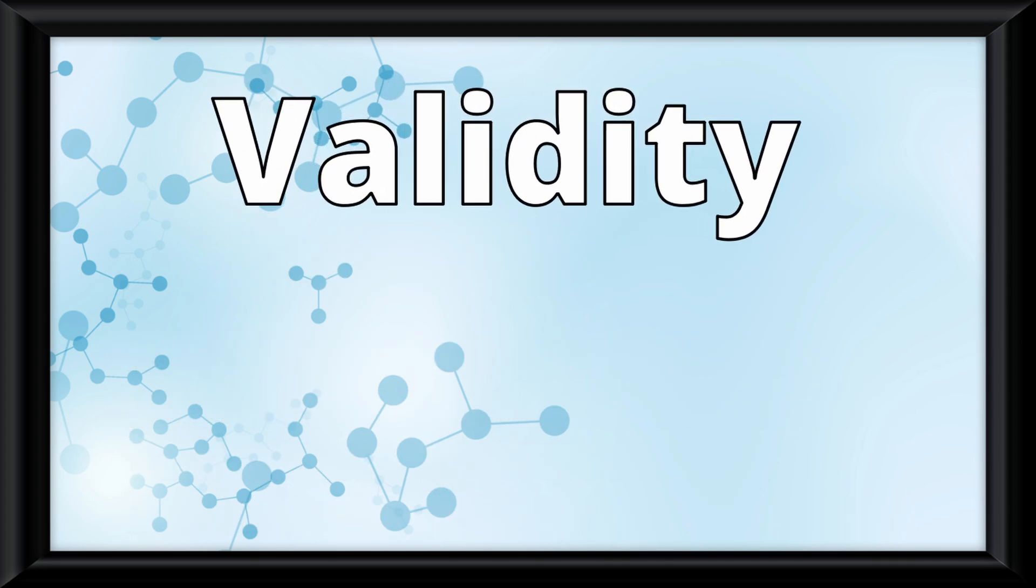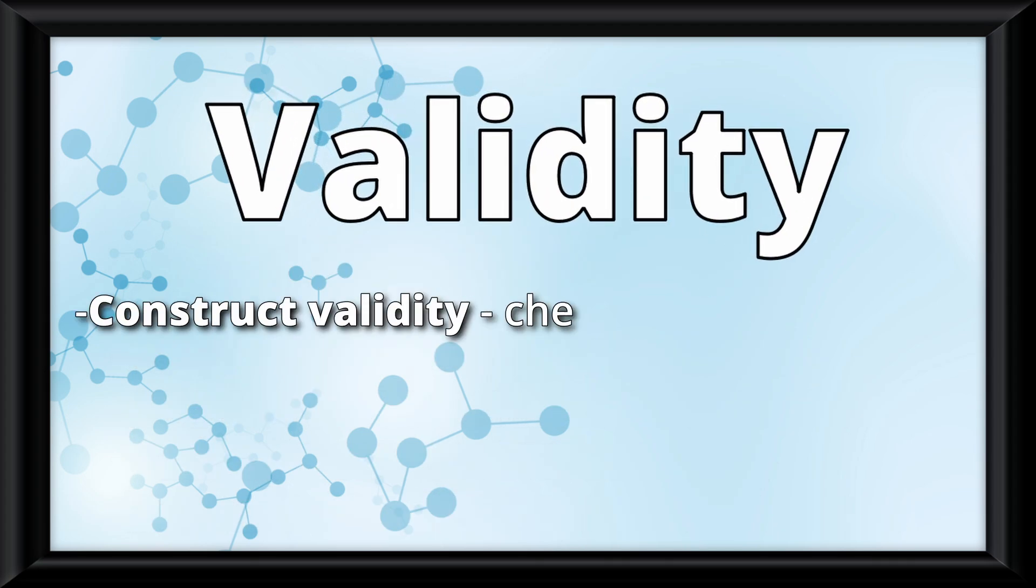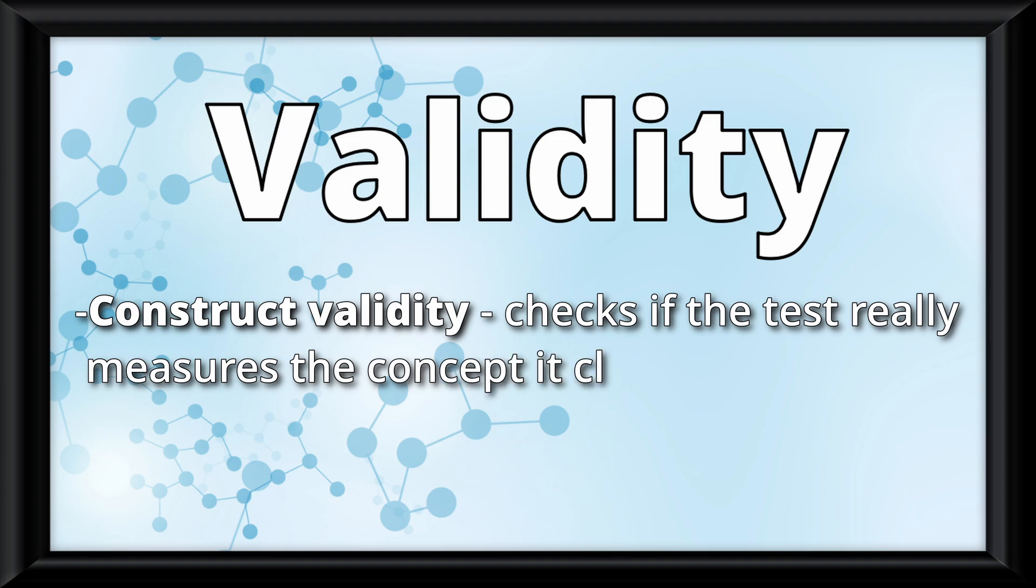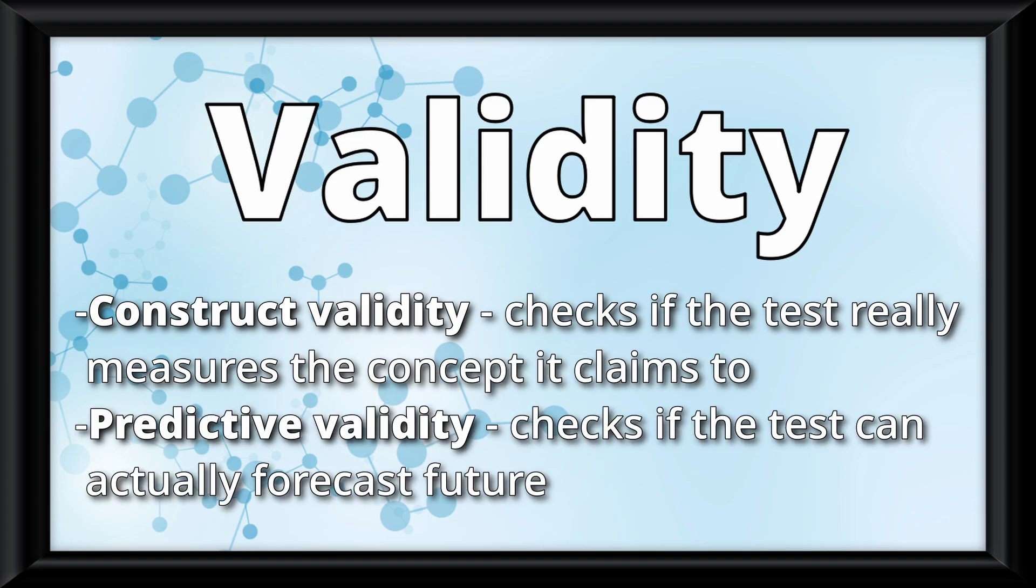Validity actually splits into two types. Construct validity, which checks if the test really measures the concept it claims to, and predictive validity, which checks if the test can actually forecast future performance.